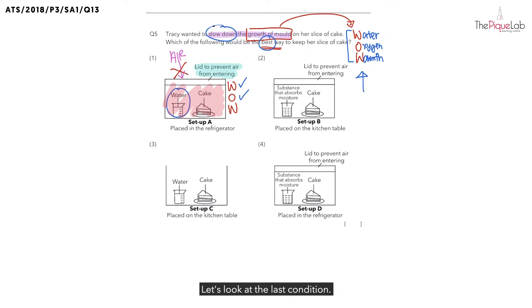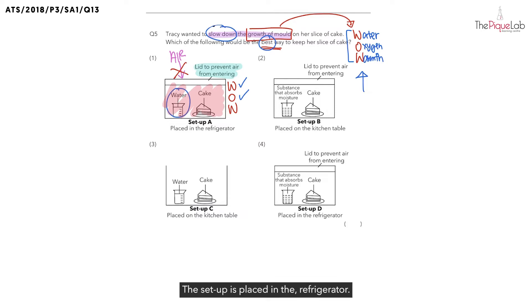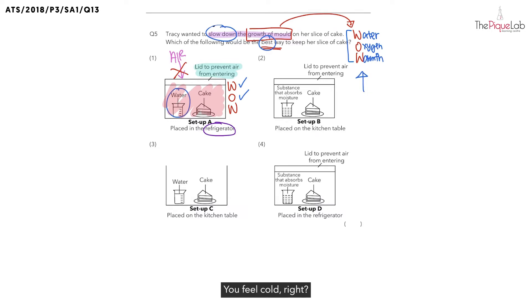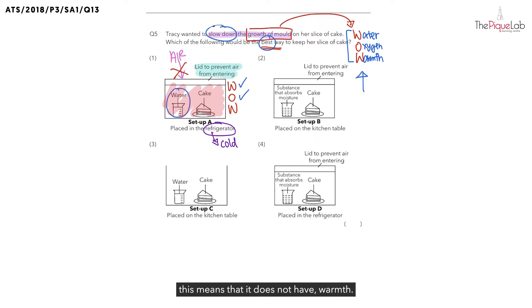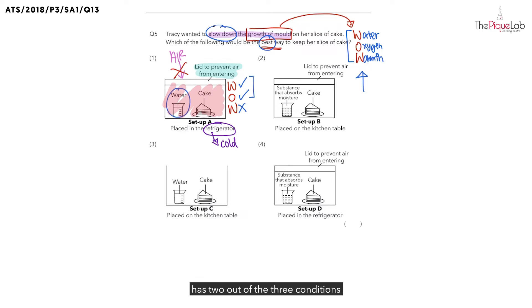Let's look at the last condition. The last one is about warmth. Look at where the setup is placed. The setup is placed in the refrigerator. And if you open the refrigerator and stick your head inside, how do you feel? You feel cold, right? So what does this suggest to you? Since the refrigerator is cold, this means that it does not have warmth. And this would mean that the setup in option 1 has 2 out of the 3 conditions needed for mold to grow.